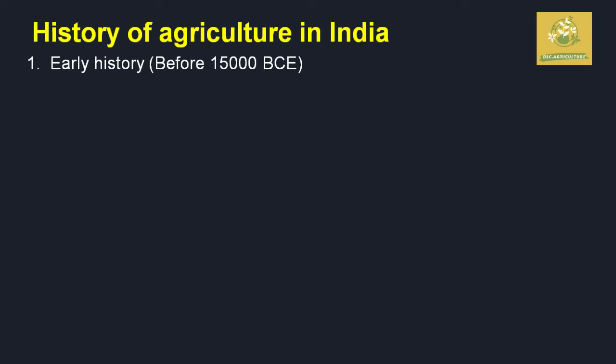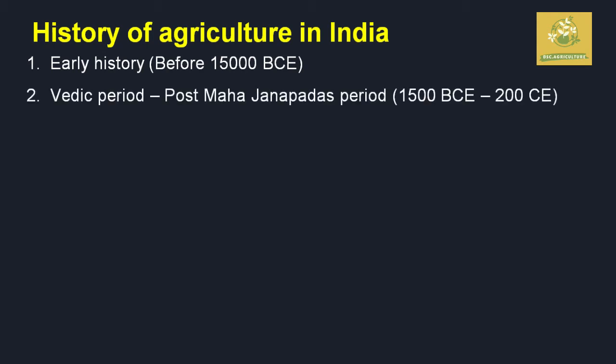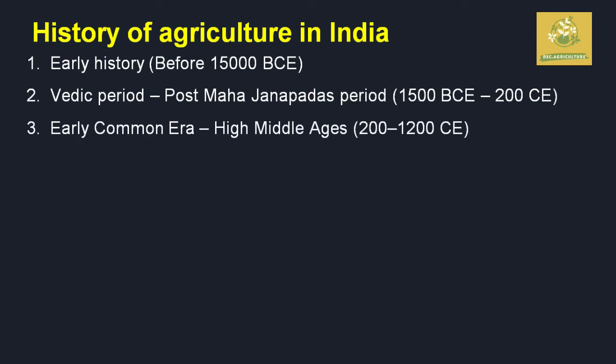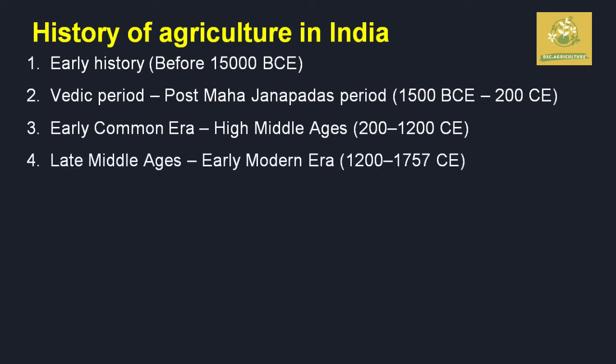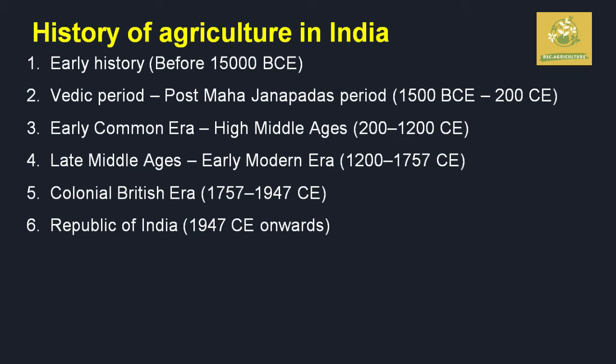The history of agriculture in India started around 15,000 BC. Afterwards it progresses through the post Mahajanapadas period from 1500 to 2000 CE, the early common era to high middle ages from 200 CE to 1200 CE, the late middle ages to early modern era from 1200 to 1757 CE, the colonial British period up to independence, and the Republic of India — the period after independence.